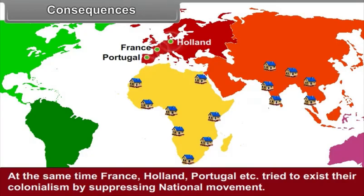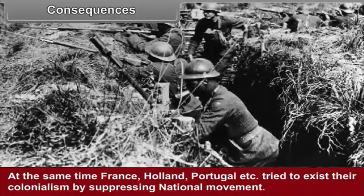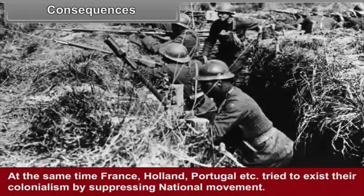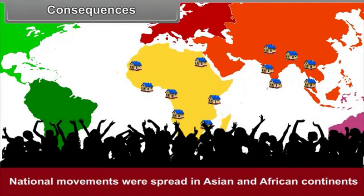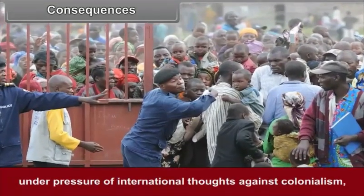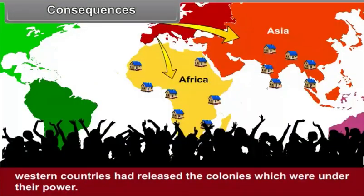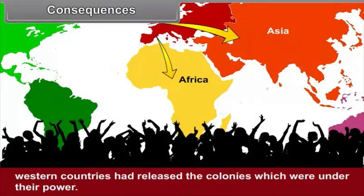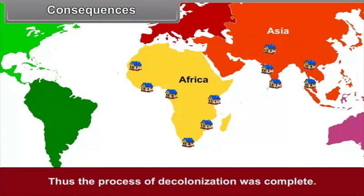At the same time, France, Holland, Portugal and others tried to maintain their colonialism by suppressing national movements. National movements spread in Asian and African continents and events took place related to emancipation from colonialism. Under pressure of international thoughts against colonialism, Western countries released their colonies. Thus, the process of decolonization was completed.